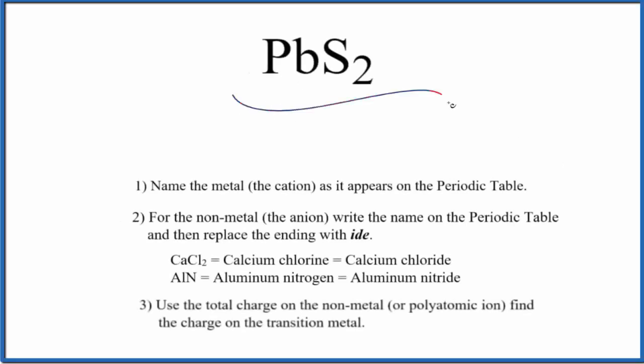Let's write the name for PbS₂. So first off, we have lead. Lead is what we consider a post-transition metal. It can have variable charges. So we have our lead, which is a metal, and then sulfur, nonmetal. We'll consider this an ionic compound here, and we'll use these rules.